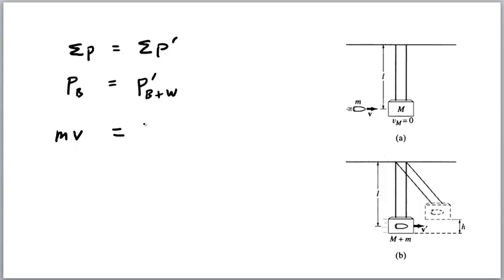So, the bullet has momentum mV. The wood-block is not moving. Afterwards, the momentum is M plus m, as we now have the bullet inside the block, times V prime. V prime is the velocity just after the bullet embeds itself into the block, because that will immediately slow down as it swings up.